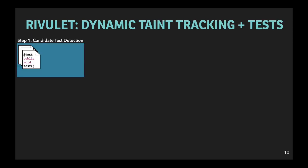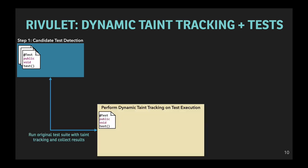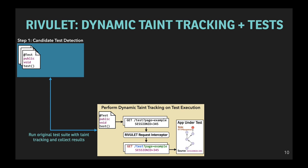Rivulet detects injection vulnerabilities by combining taint tracking and testing in a three-phase model. First, Rivulet detects candidate tests that might be used to detect security vulnerabilities. It does this by executing each of the original developer-provided tests using dynamic taint tracking, where it intercepts each HTTP request as it arrives in the application server, tainting each component of the request, and then inspecting when that tainted data arrives at a potentially vulnerable sink location, like one that can execute code, where it can then inspect the taint tags on that data to identify which, if any, of the user-controlled inputs flowed to it. In this case, a cookie header was detected as flowing back to the user through an HTTP response, which could be exploited in a cross-site scripting attack.